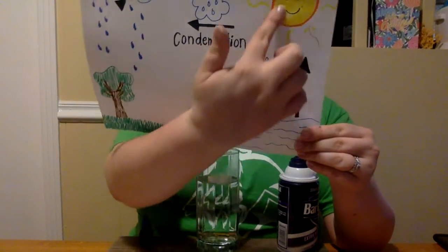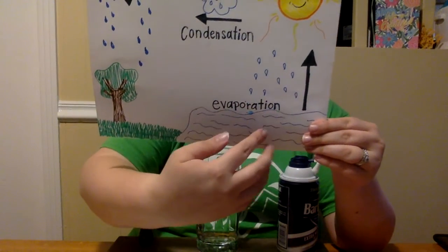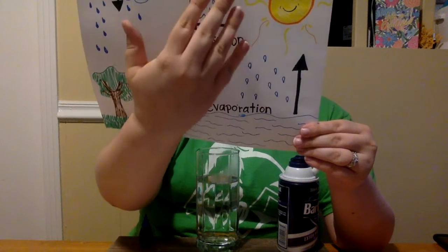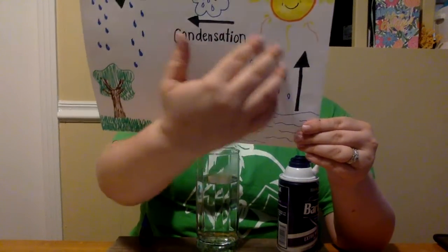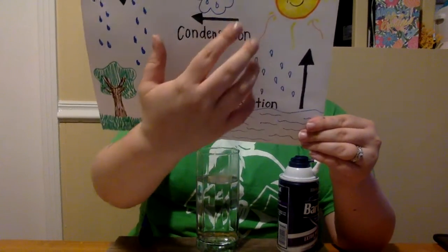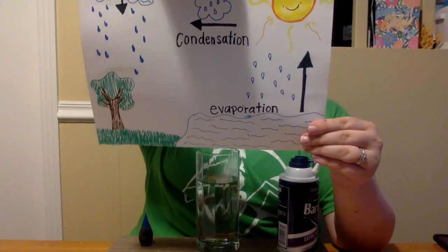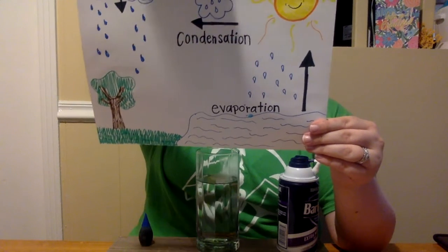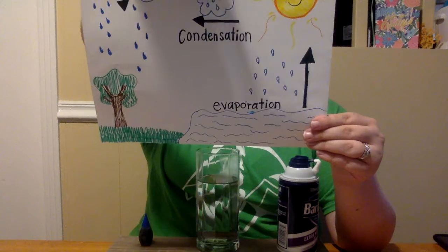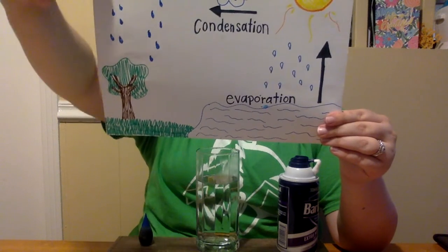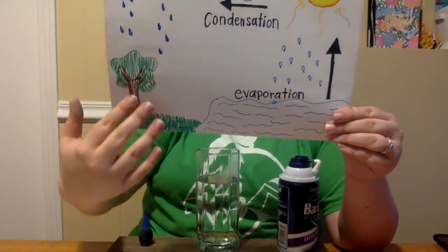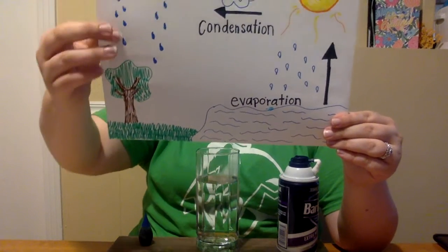Evaporation is when the sun heats up a collection of water and it evaporates into the sky. When enough water has evaporated into the sky, it forms clouds as condensation. When clouds get too much moisture in them, it causes precipitation, which is when we get rain, sleet, hail, snow, anything like that.